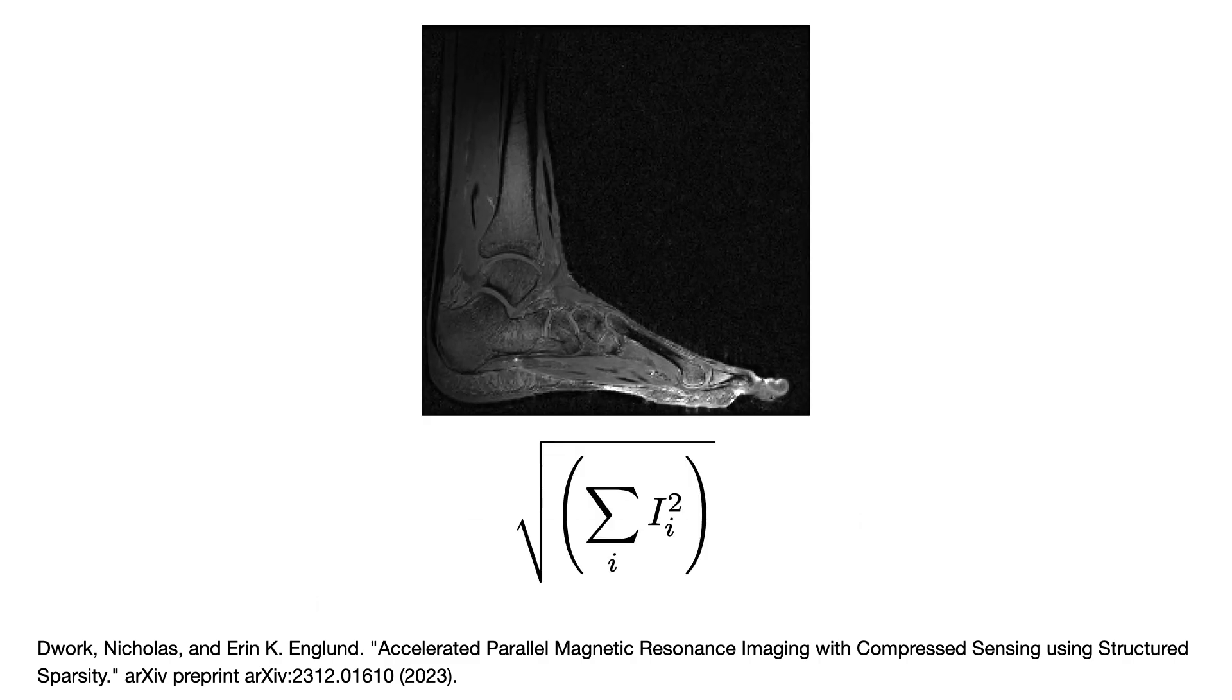What I've shown here is a very simple way to combine these images. You simply take each voxel, sum the corresponding voxels from all the coils, and square root the result.